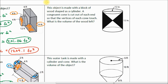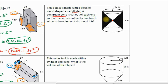This is the upper right hand corner. The question is: this object is made with a block of wood shaped like a cylinder — so we're starting off with a cylinder shape, this whole object here. A congruent cone is cut out of each end so that the vertices of each cone touch right here. So this cone and this cone are congruent. If we can find the volume of one, we'll know the volume of the other. They touch each other right at the apex, or right at the top point here.